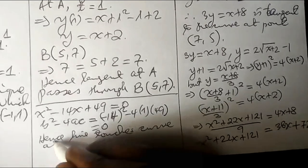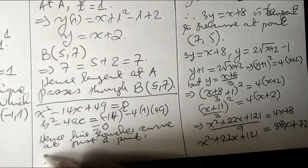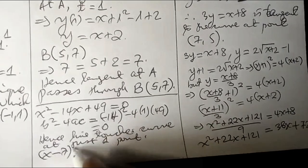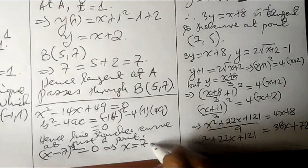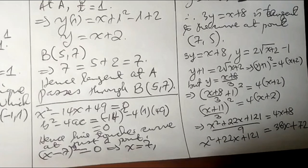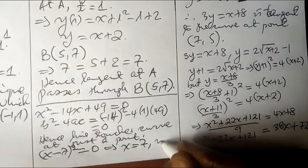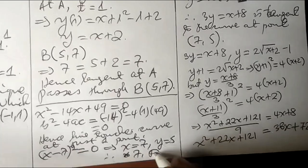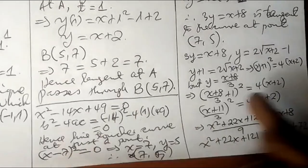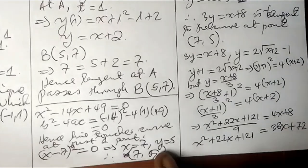The equation x squared minus 14x plus 49 equals 0 is a perfect square: (x minus 7) squared equals 0, giving x equals 7. Substituting x equals 7 into the tangent line equation gives y equals 5. This confirms the point of contact is (7, 5), consistent with the parametric method. Both methods yield the same result.